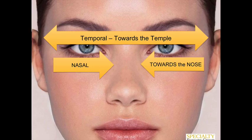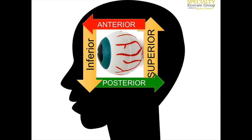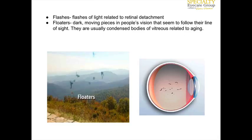When talking about parts of the eye, we may indicate that a location is nasal or temporal. Anything towards the nose is nasal; if it's towards the temple or the outer part, it is temporal. Inferior is down, posterior is back, anterior is front, and superior is up.